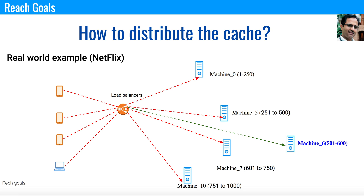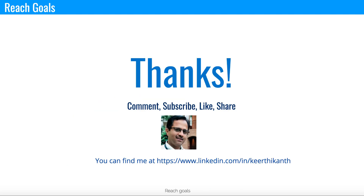We can treat this as a ring — Machine 1 to 10 can be connected as a ring, and you can visualize it as a circle. That is what is called a consistent hash ring. This is a very popular concept used in all load balancers. When you want to distribute content across the globe with minimum impact to existing machines, this is the mechanism used for consistent load balancing. Thanks for watching.